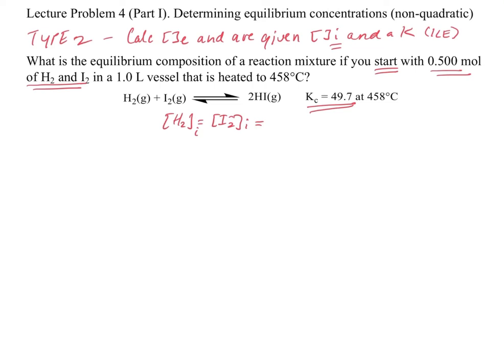When you get two concentrations that are the same, that generally means you won't need the quadratic equation — it simplifies things, and I'll show you why. Let's calculate those concentrations: 0.500 moles of H2 and I2 divided by 1 liter gives us 0.500 molar. Don't forget this step of actually calculating a proper concentration. We should also write our K equation: K equals concentration of HI squared divided by concentration of H2 times concentration of I2.